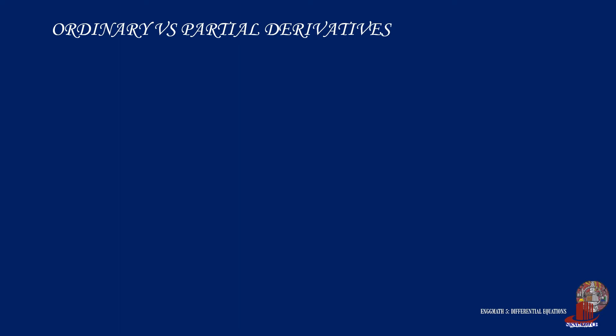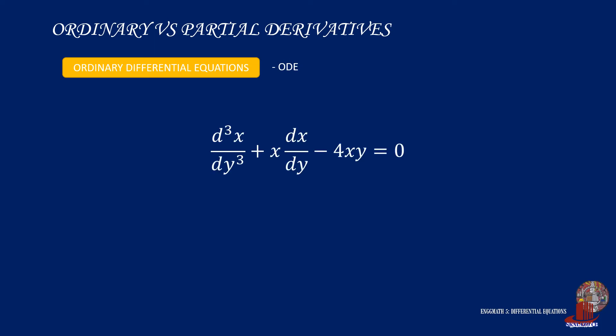The two general kinds of differential equations are known as ordinary DE or ODE and partial DE or PDE. Let's start with ODE. Take the equation the third derivative of x with respect to y plus x times the derivative of x with respect to y minus 4xy is equal to 0. Take a look at the independent variables. In this example, we notice dy for both terms, so there is one independent variable. With it are dx, which we denote as dependent variable. In this case, for an equation having only one independent variable, we call it ordinary differential equation.